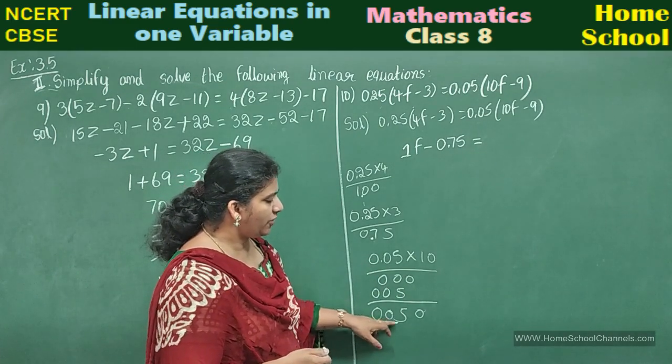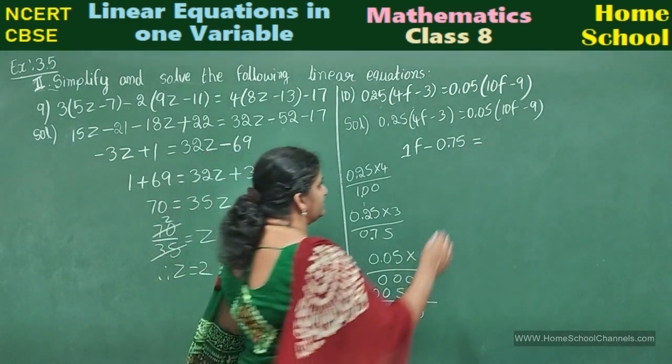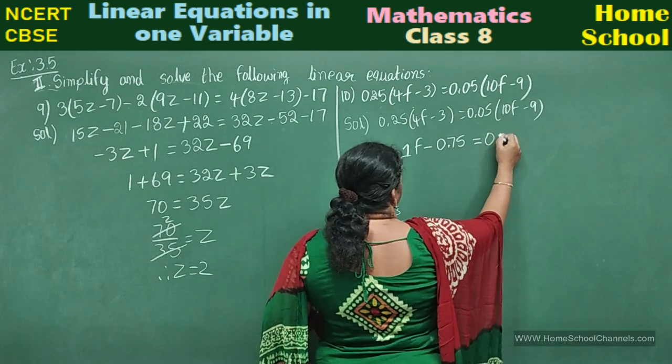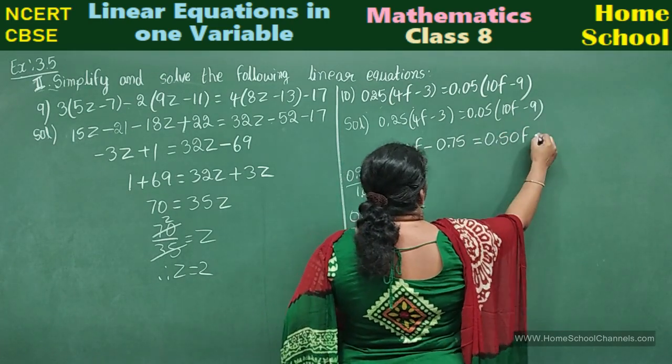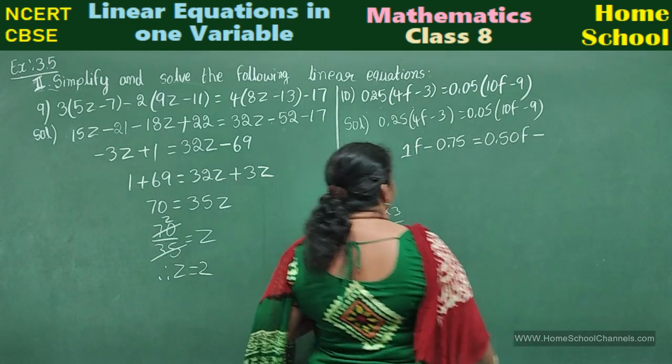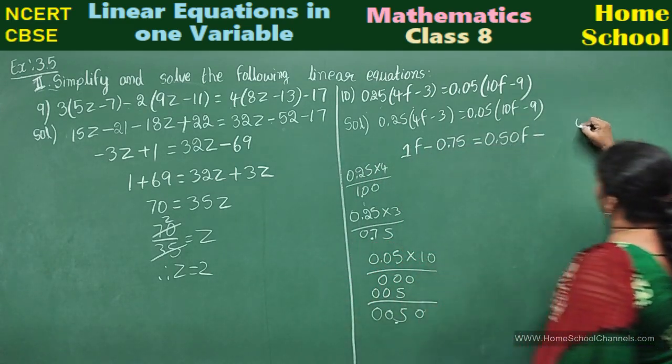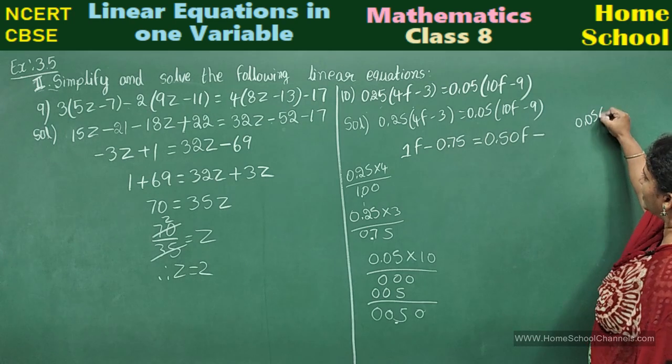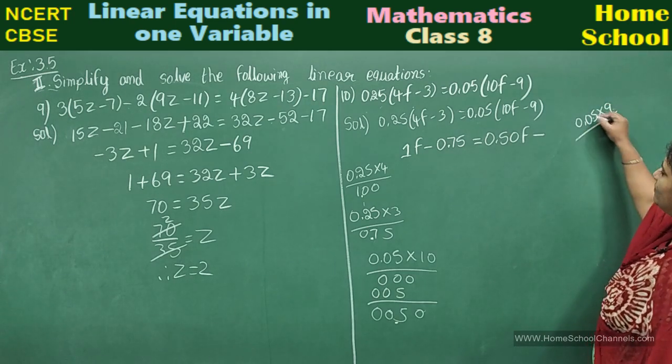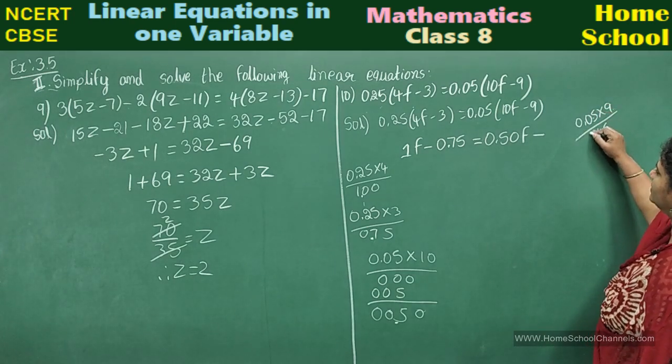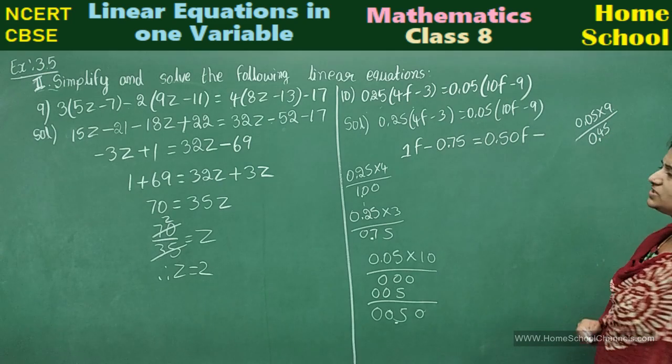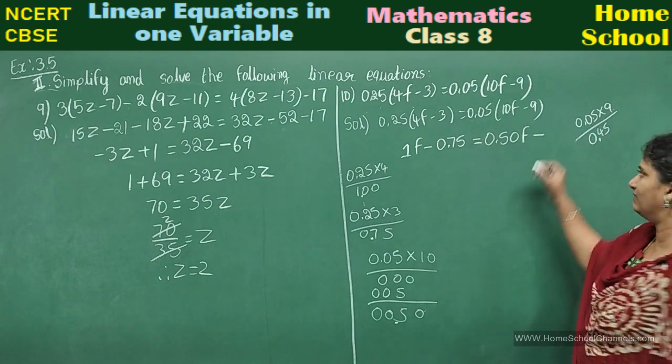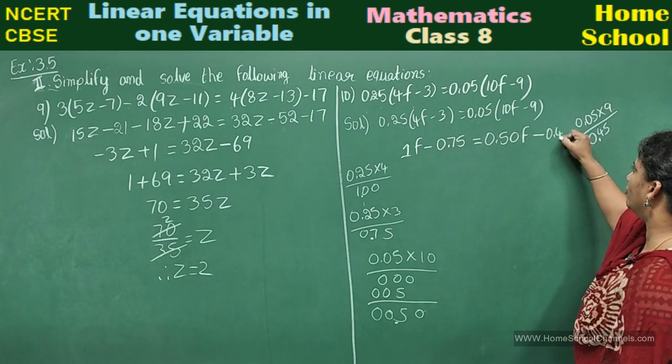Plus into minus is minus. 0.05 into 9: 9 fives are 45. And this one will be 0.45.